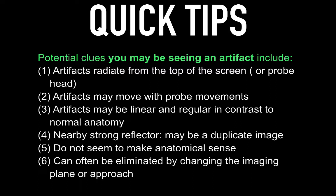Here are some potential clues that you may be seeing an artifact: the artifact may radiate from the top of the screen or the probe head; it may move with probe movements; it may be linear and regular in contrast to normal anatomy; there may be a nearby strong reflector, such as the diaphragm or pericardium, which can result in a duplicate image. They do not seem to make anatomical sense, and they can often be eliminated by changing the imaging plane or approach.